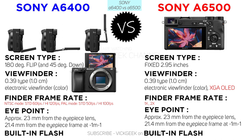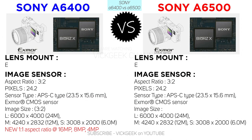If I don't mention some features you're looking for, that means they are absolutely similar in both cameras — I've done thorough research and prepared this chart accordingly. Both cameras support E-mount lenses, and the image sensor is identical: they both share the same 24.2-megapixel X-Mor CMOS sensor.